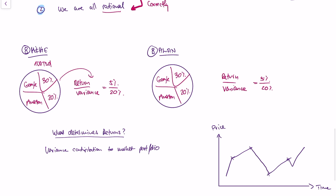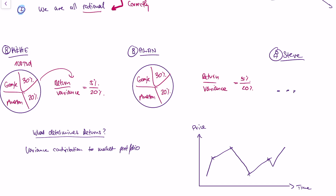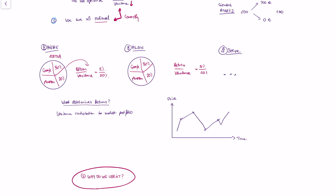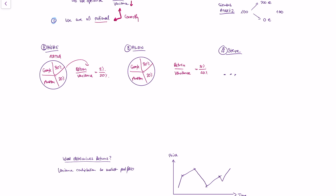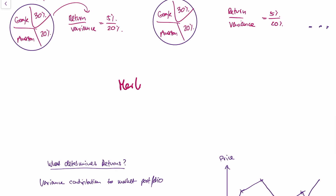We could go on and on. A third investor, Steve, will do the same thing and buy the same portfolio as Mike and Alan. So what does this mean in the end? If we look at what everybody in the market buys, then the market portfolio is the efficient portfolio — everybody will hold the same portfolio.